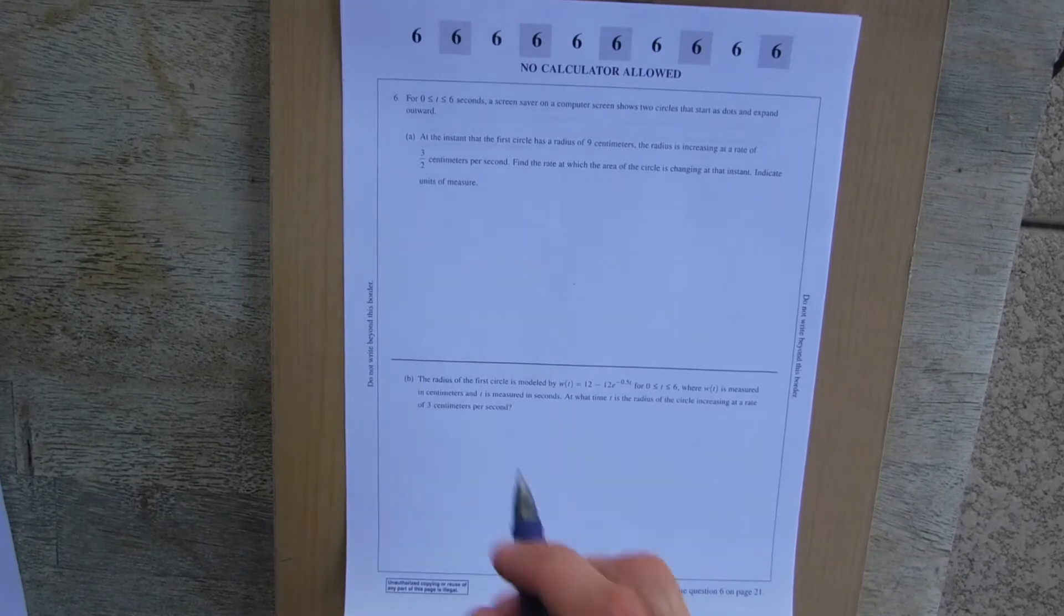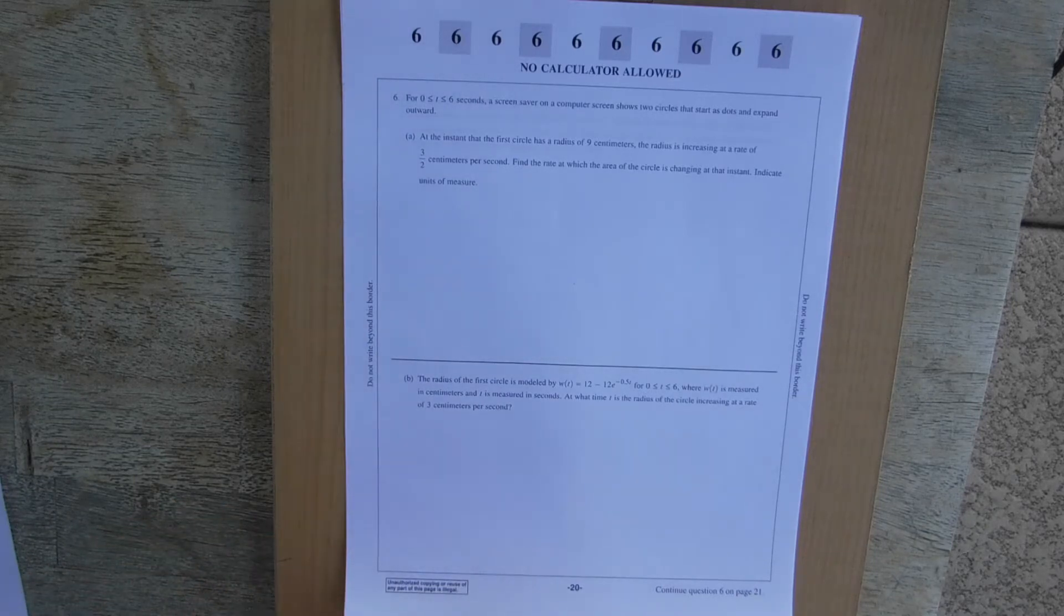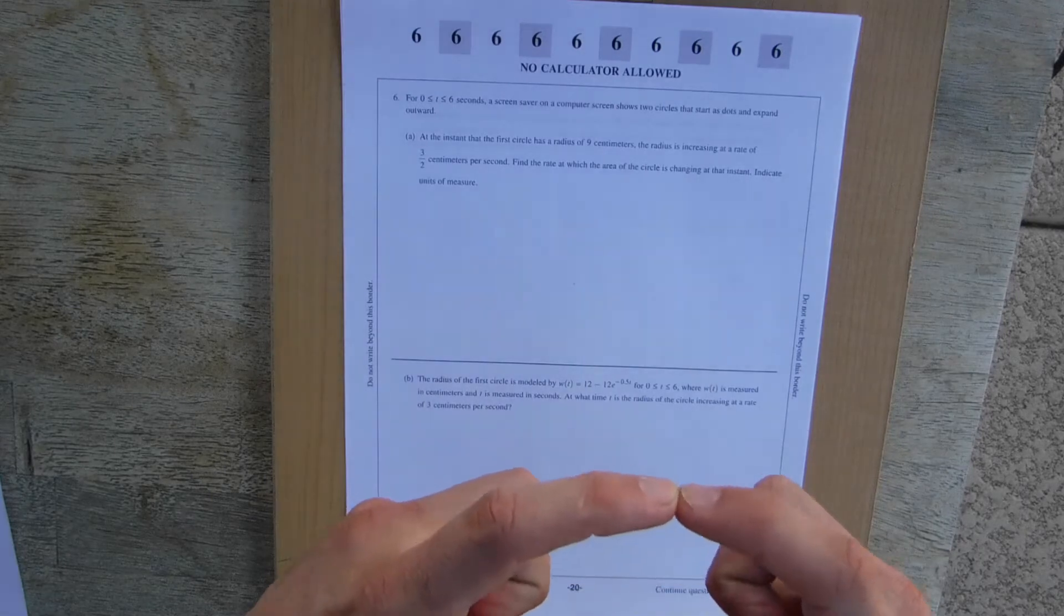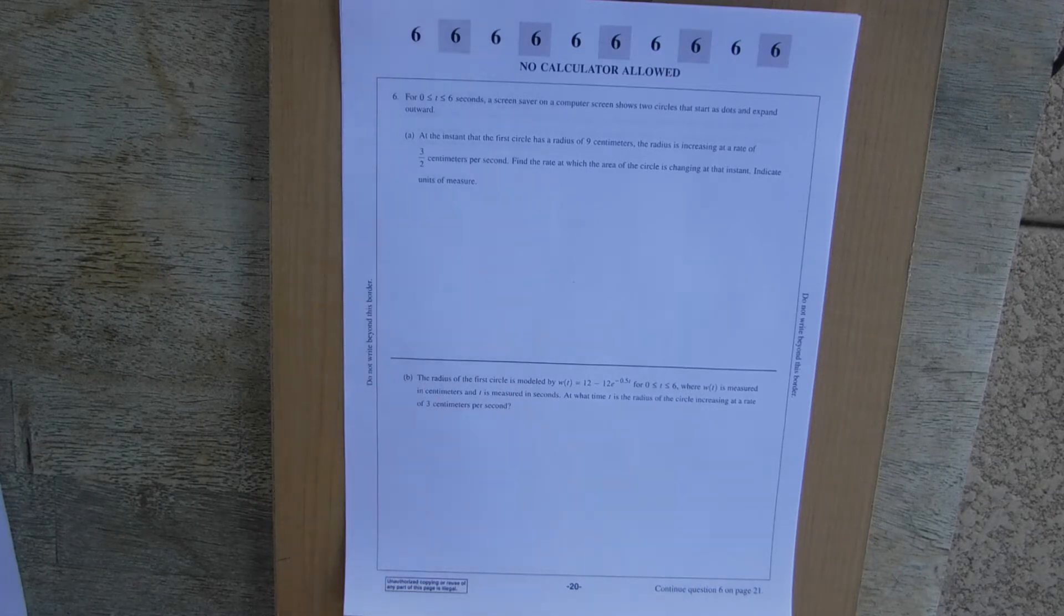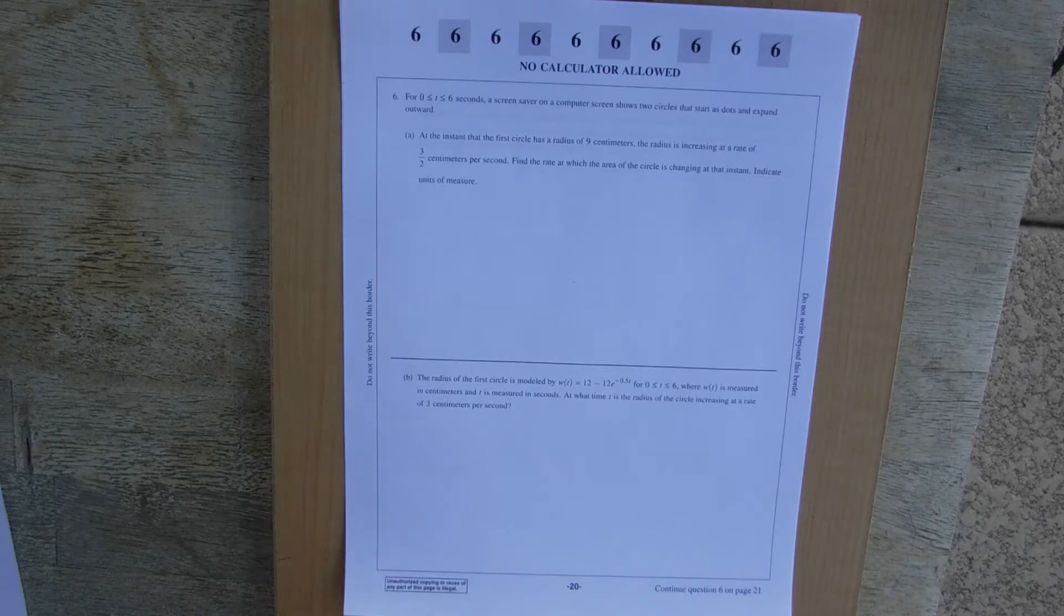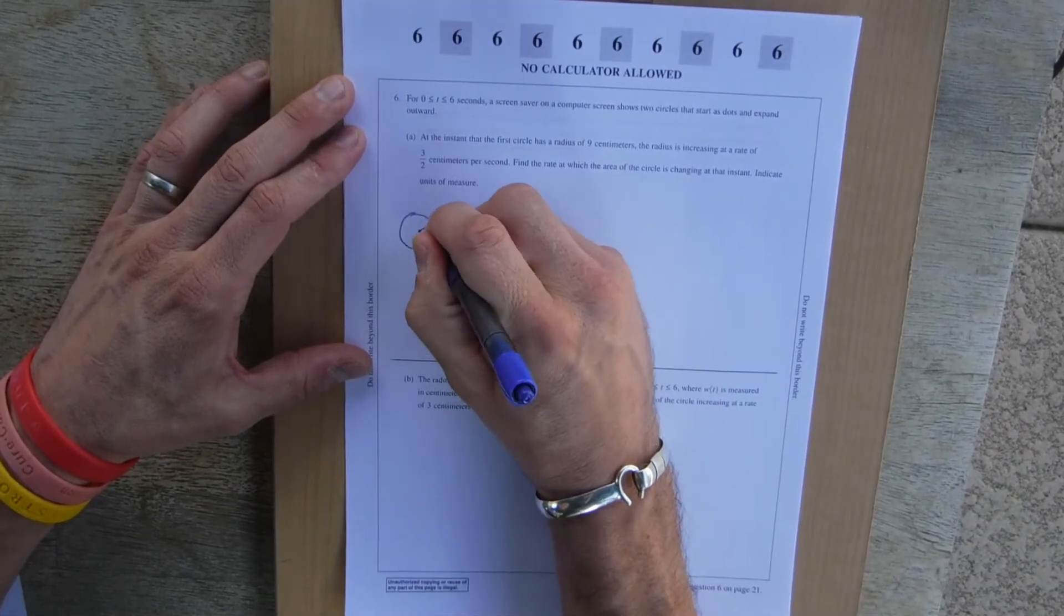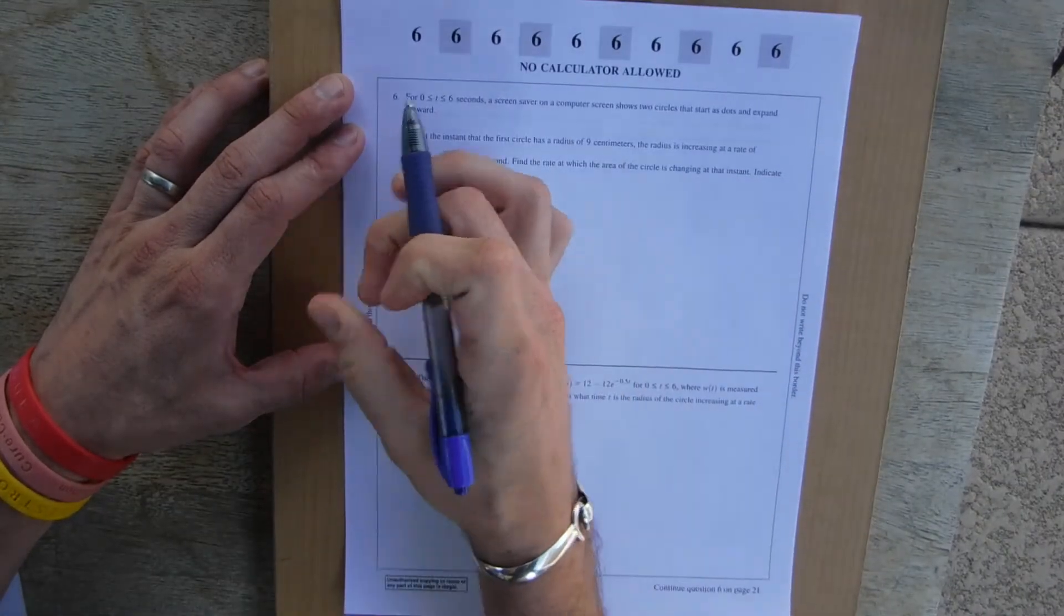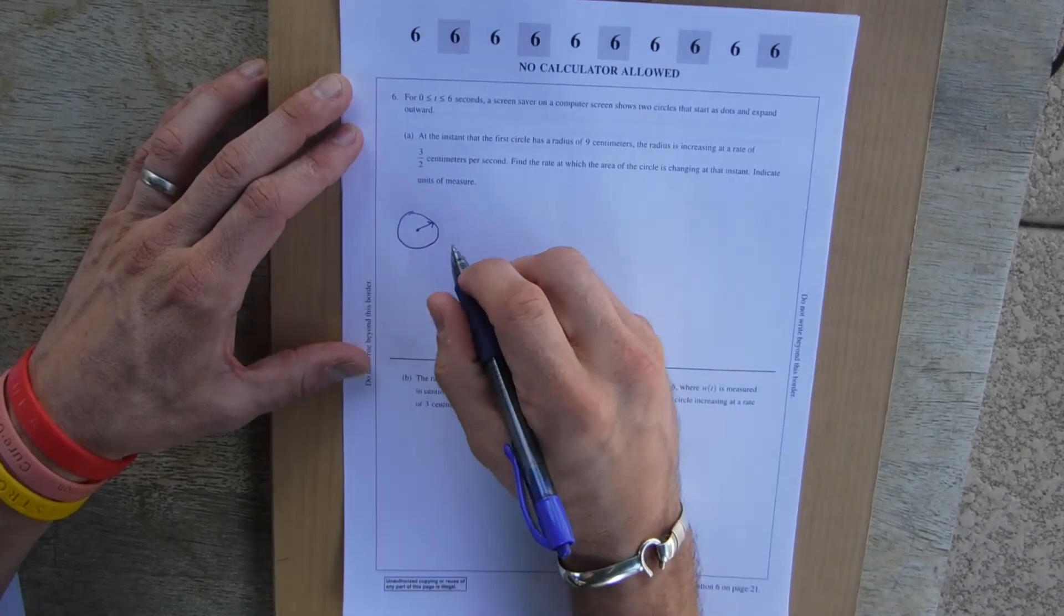Alright, so it says here for 0 to 6 seconds, a screensaver on a computer is showing two circles that start as dots and then they expand outwards. So a circle and then it just gets bigger. So I love pictures. Pictures help me understand the world. Alright, so here's our circle, and this circle is getting bigger.